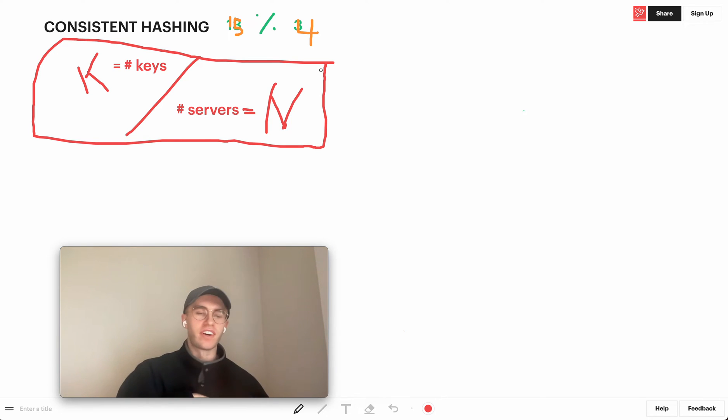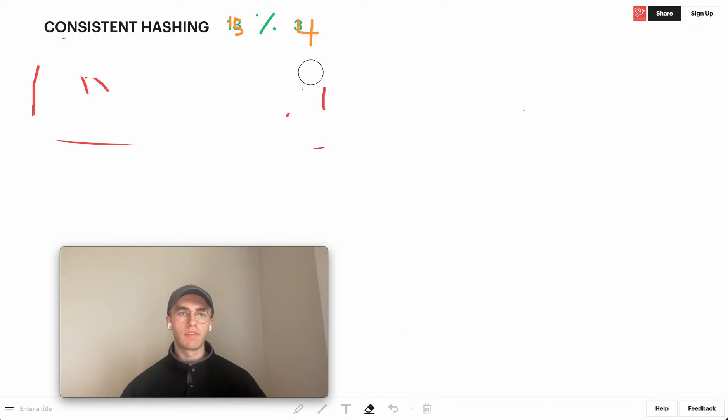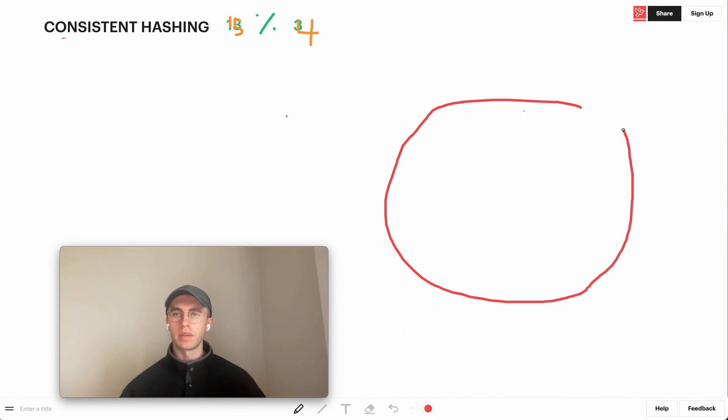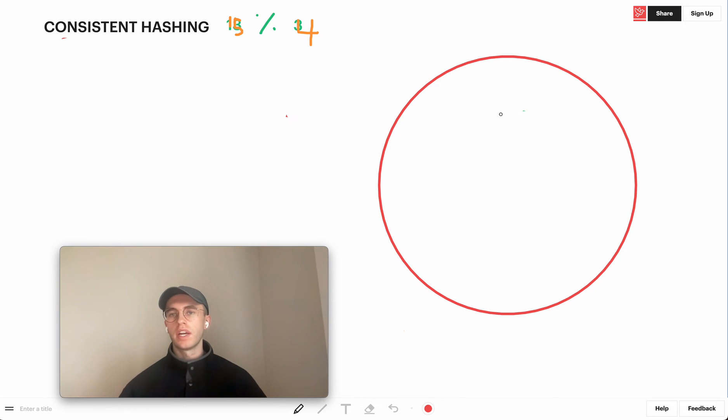That's much better than shuffling all of them. So the way this is actually done behind the scenes is that essentially we're going to route everything on a big circle. Essentially what we're going to have is a big circle. Typically what you would imagine is that this might form a range of IP addresses. Let's just keep the same IP address example.